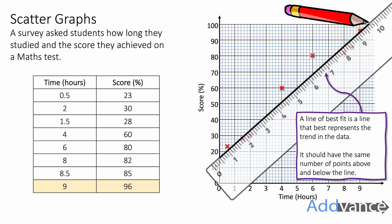It perfectly represents the trend of the data. In general it should have the same number of dots above and below the ruler to be balanced.